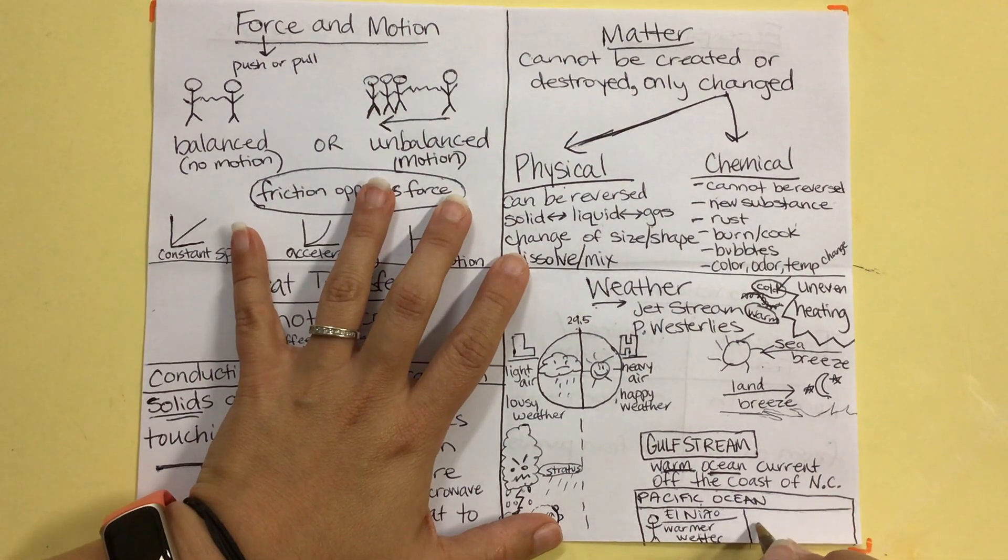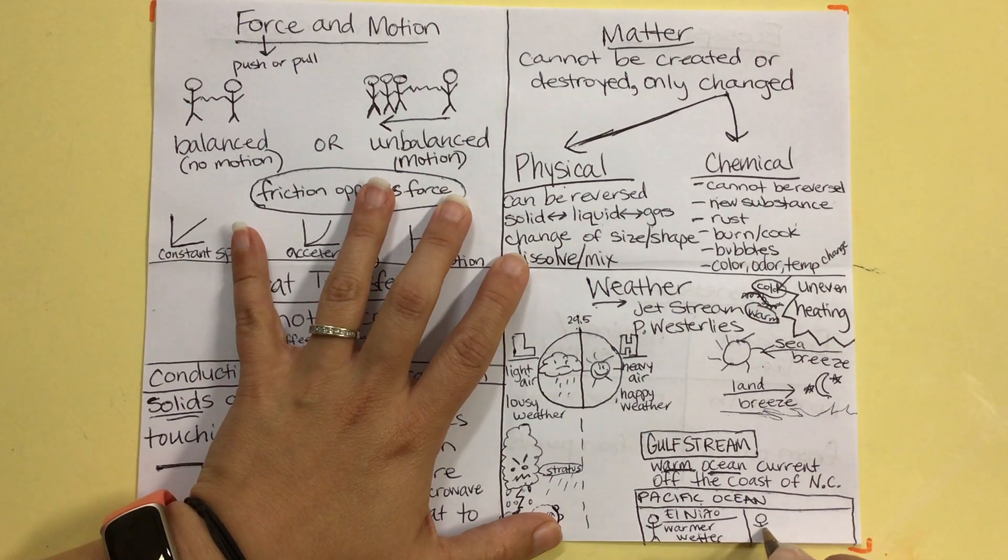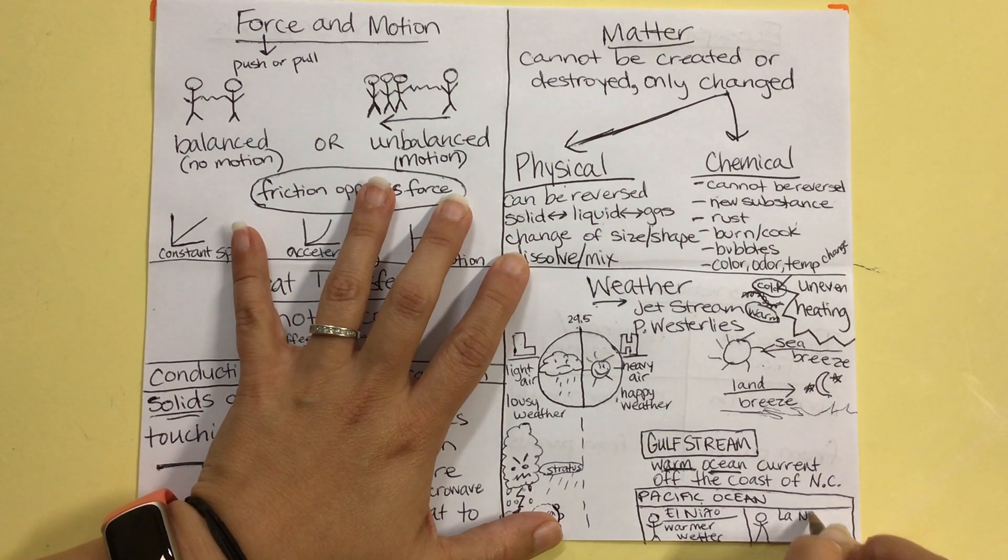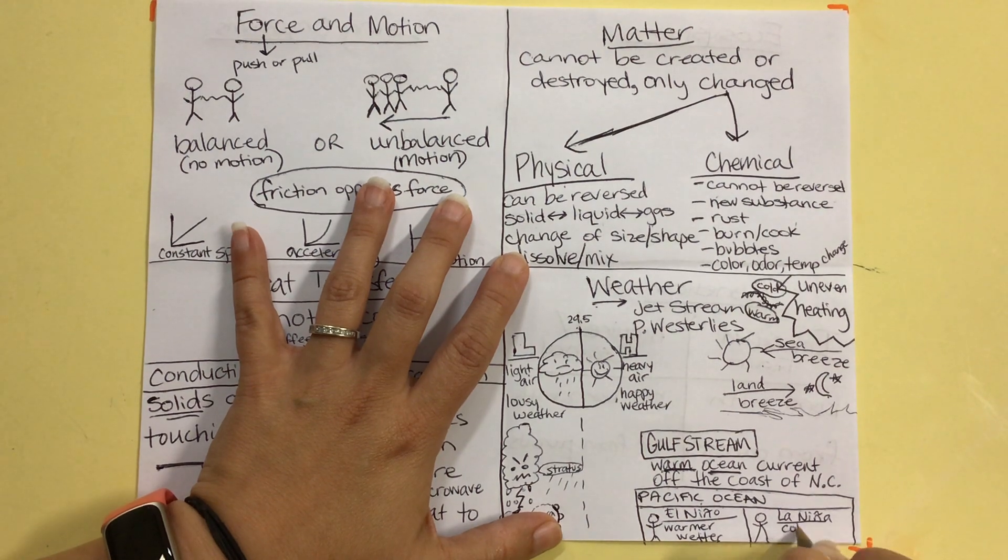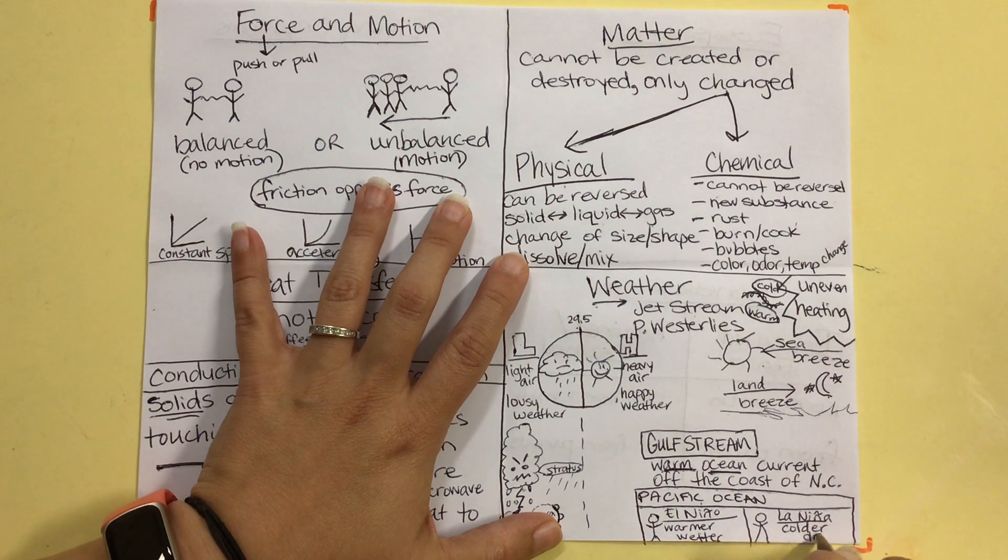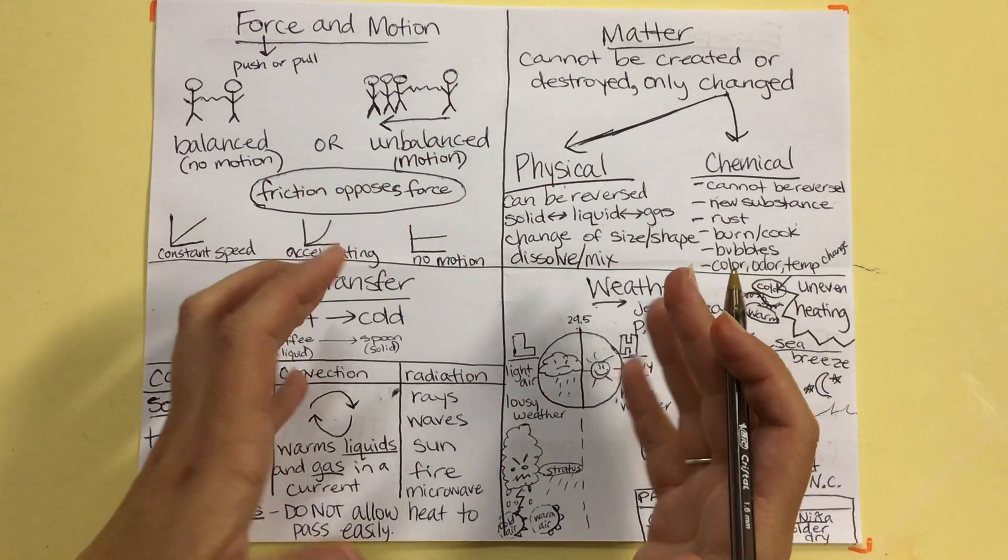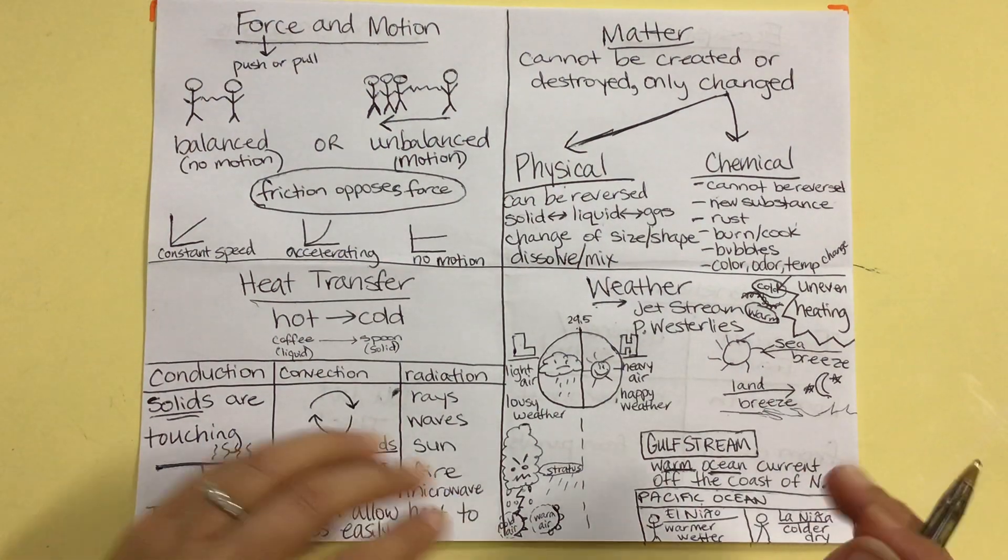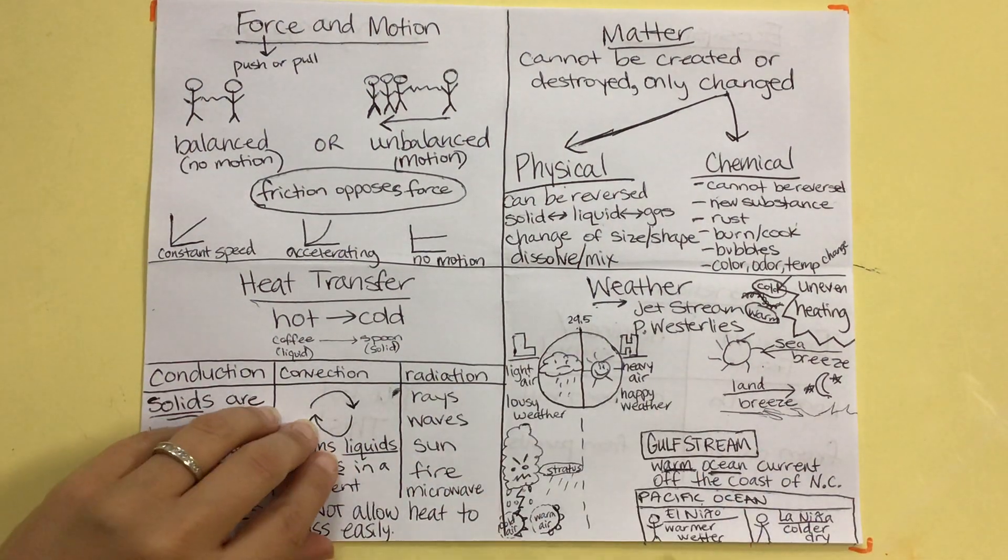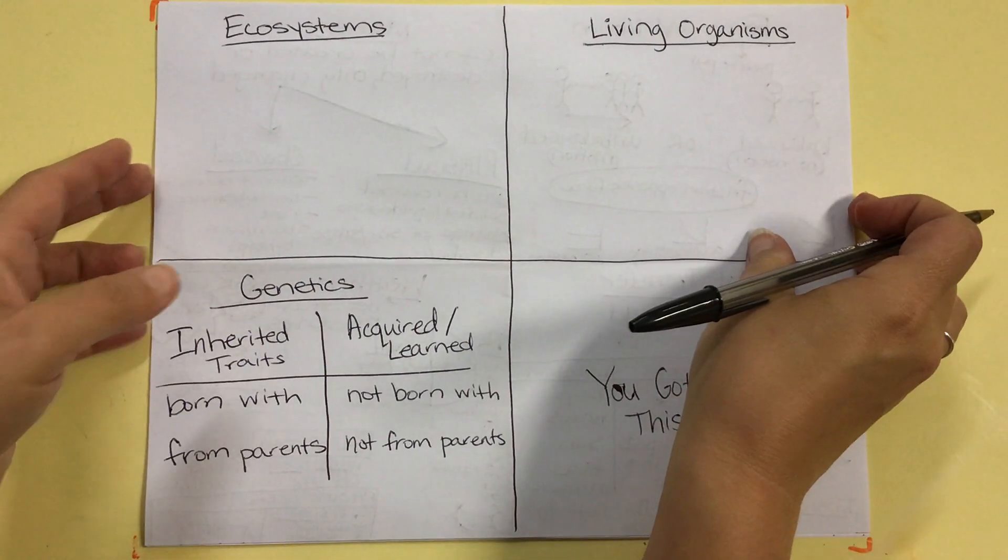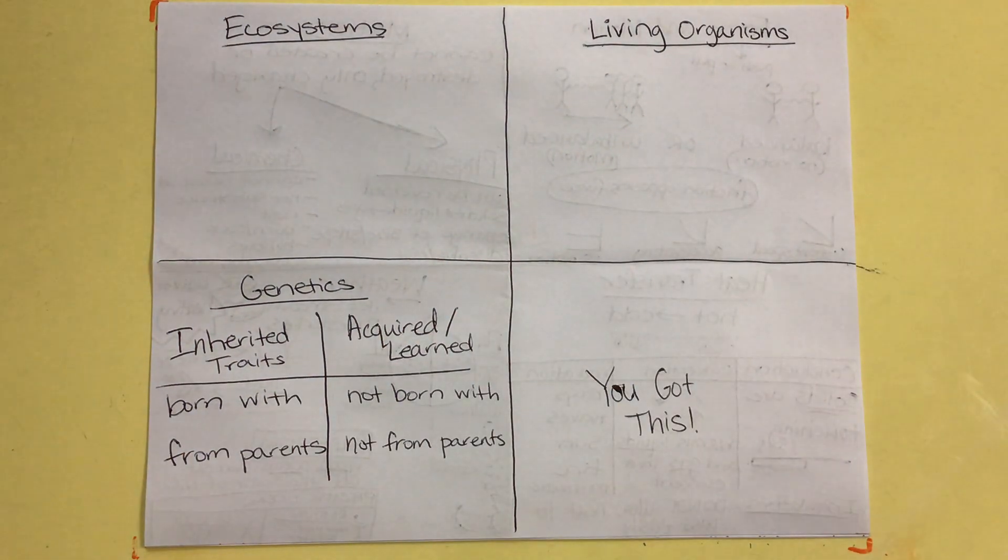And, then, the opposite of El Nino, because science is full of opposites, is La Nina. And, that is when the Pacific Ocean is colder than usual. And, it brings dry weather. Because, the Pacific Ocean is cold, it's not evaporating. And, it's not able to move across the United States, bringing us more weather. And, we are almost done already. That was super fast.